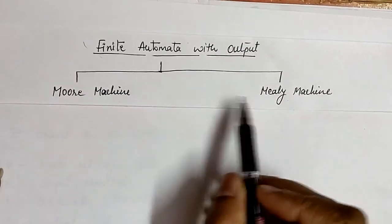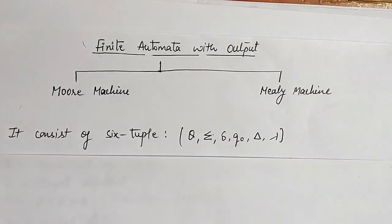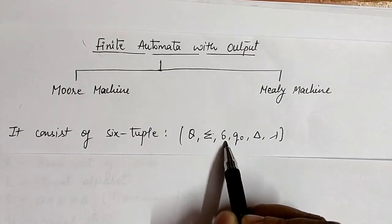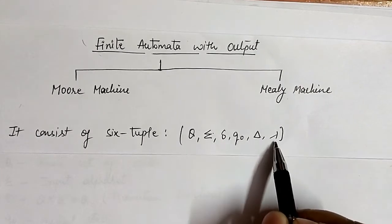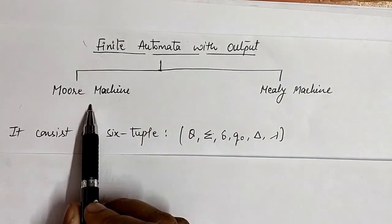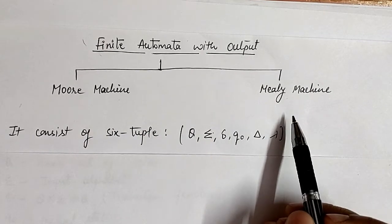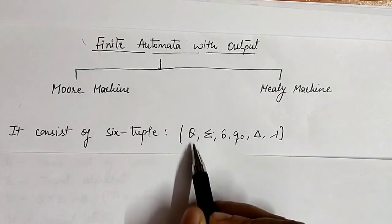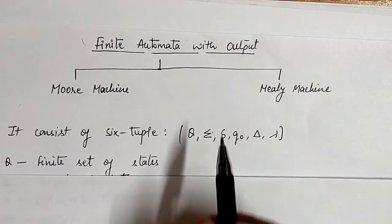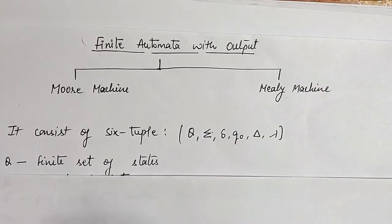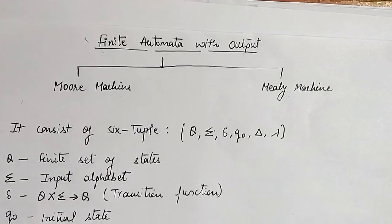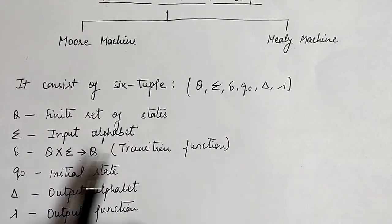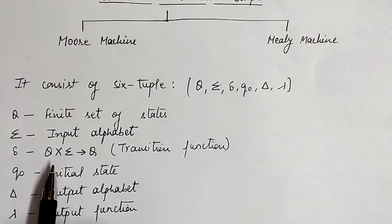But before moving ahead, both these two machines consist of six tuples: Q, Sigma, delta, q-naught, capital Delta, and lambda. Both machines, whether it is a Moore or a Mealy machine, consist of six tuples. So first we discuss what these tuples mean. Capital Q is the finite set of states, and Sigma represents the input alphabet.